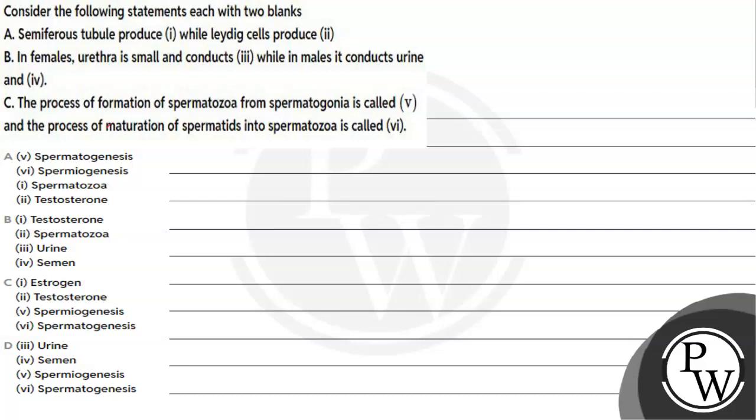Hello, let's see this question. The question says consider the following statements each with two blanks. Statement A: Seminiferous tubule produce (i) while Leydig cells produce (ii).